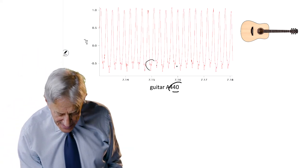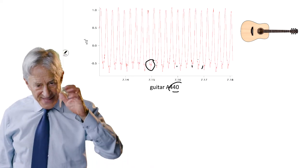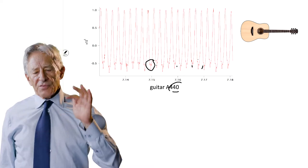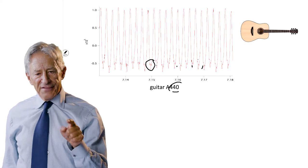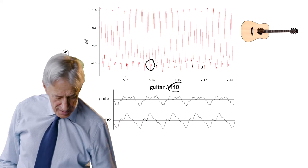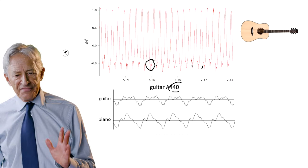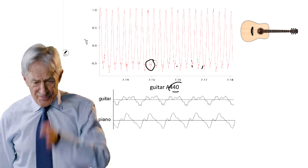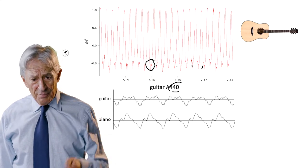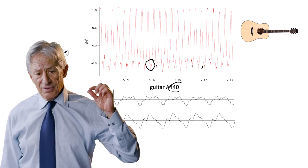You'll also see that it's not a simple round sine wave — it has a regular scalloping in it. That scalloping is what makes the guitar playing A 440 sound like a guitar, as opposed to, for example, a piano playing A 440, which has the same frequency but a different waveform, because the piano does not sound like a guitar.